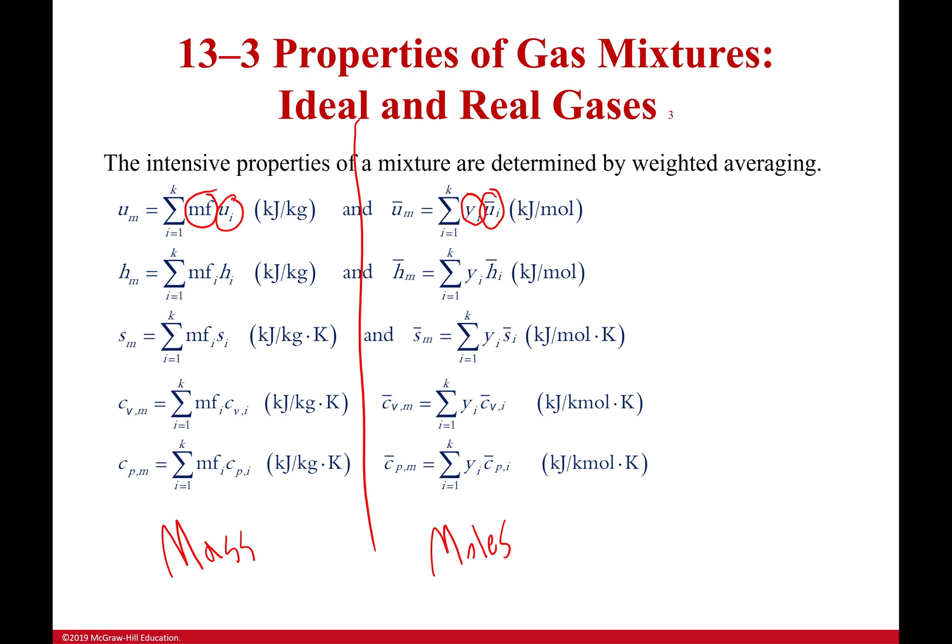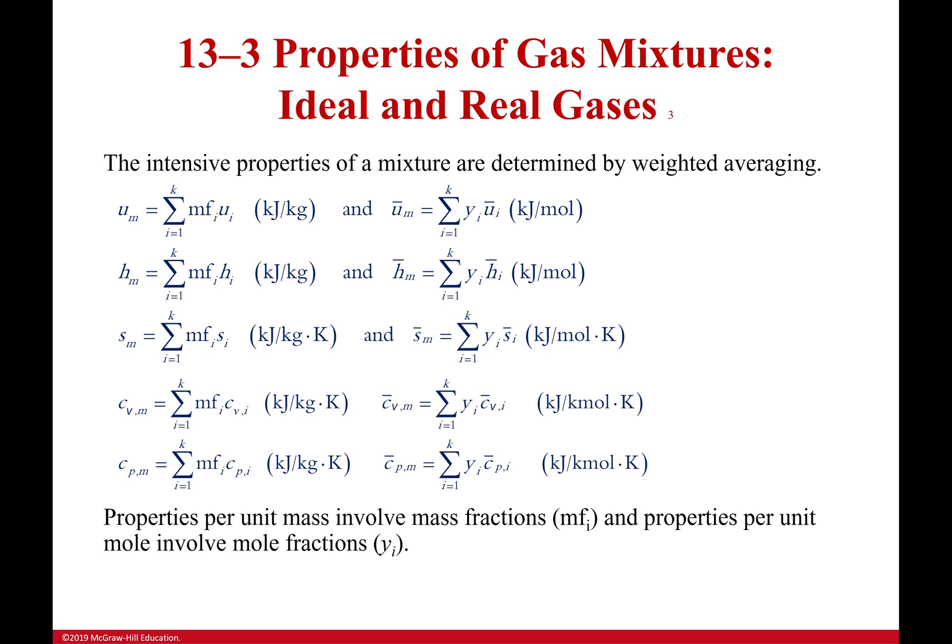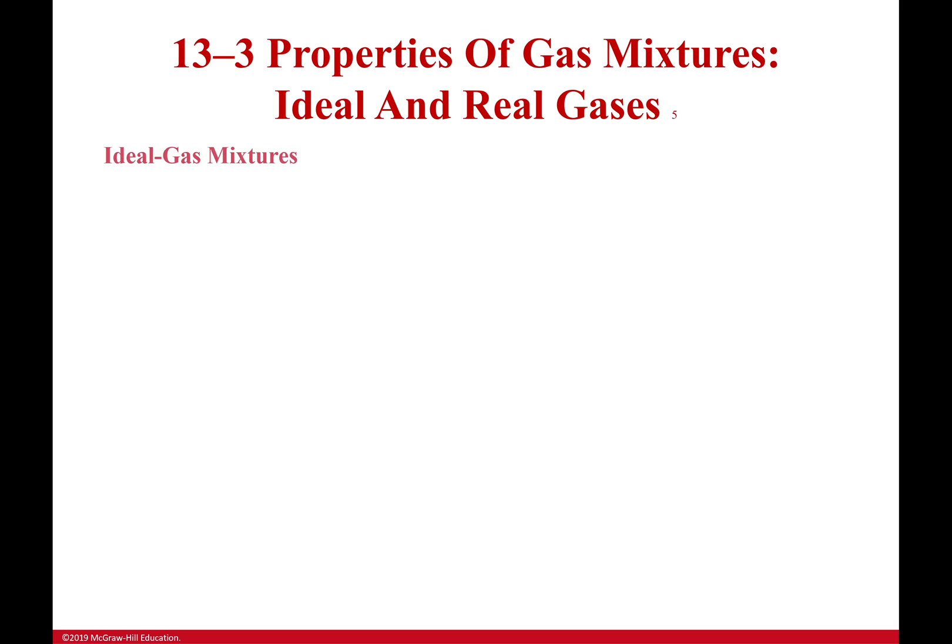On one side, multiply by the mole fraction. On the other side, I multiply by the mass fraction. And I add them all up. I can do that for everything. So internal energy, enthalpy, entropy, my specific heats. All of that works out really well. Now let's talk about ideal gas mixtures.